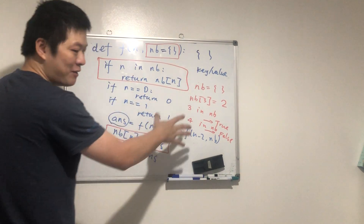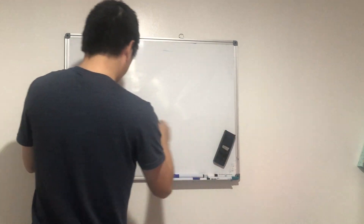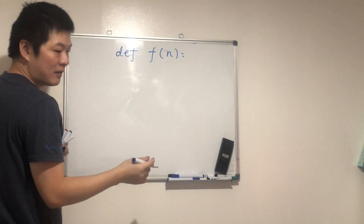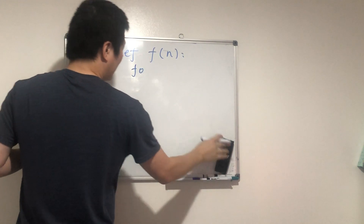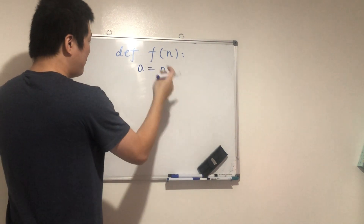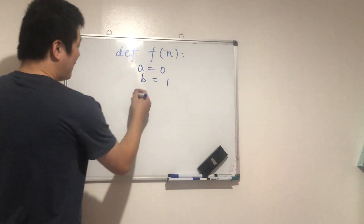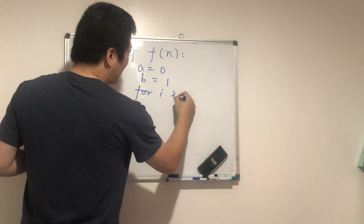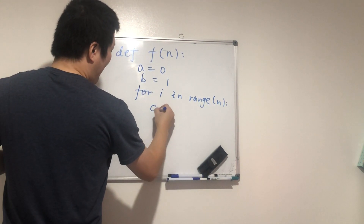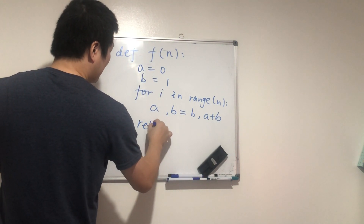We've talked about two implementations: without the notebook and with the notebook. There's also a third method, which is probably simpler to implement — called iterative. Define f(n): we define the current two items in the Fibonacci sequence. Let a equal zero and b equal one. Then for i in range(n), we iterate.